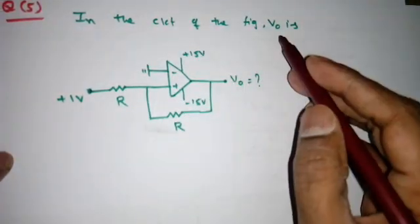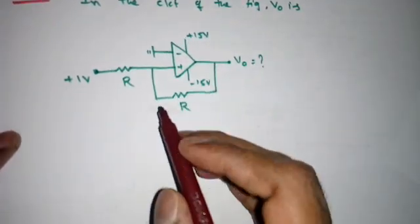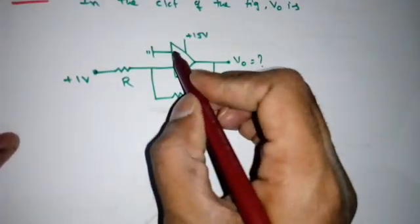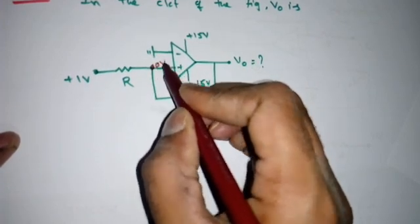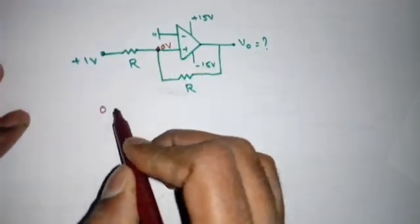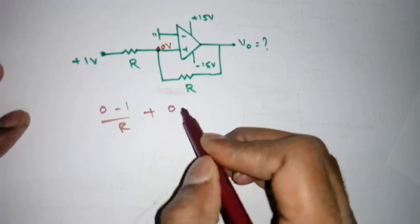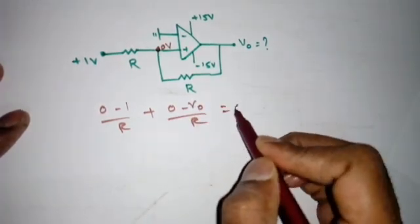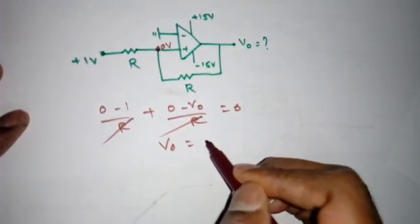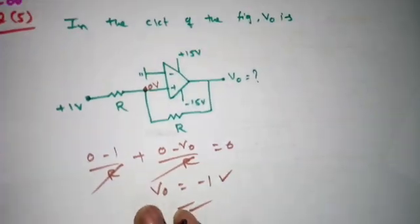We need to find V_naught again. By the virtual ground concept, this node is 0 V, so the other is also 0 V. Applying KCL: (0 - 1)/R + (0 - V_naught)/R = 0, so V_naught = -1 V. It is as simple as that.